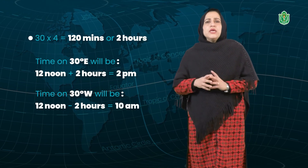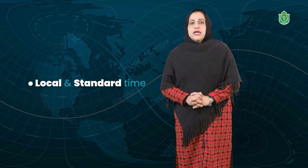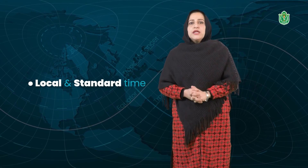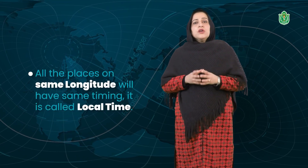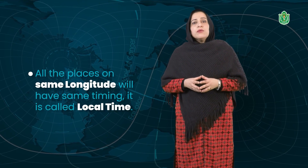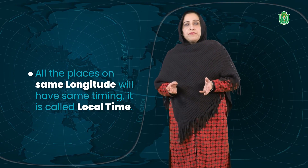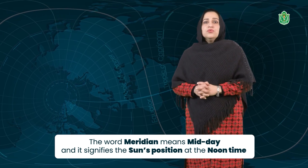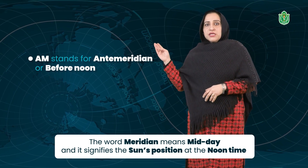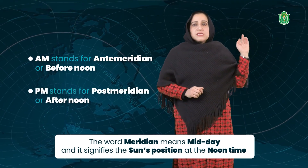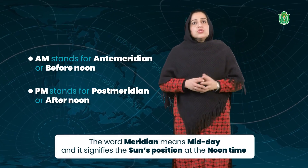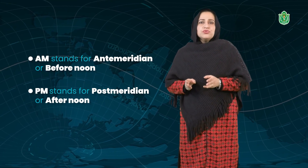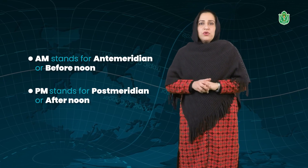This is how we calculate the timing for a particular place. Now talking about local time and standard time — the time of a particular area depends upon its longitudes. All the places on the same longitude will have the same timing, and this is called the local time of that particular meridian or longitude. The word meridian means midday, signifying the sun's position at noon time. AM stands for ante meridian or before noon, and PM stands for post meridian or afternoon.